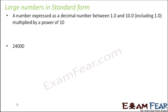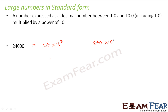Let me give you an example. Let's say you have the number 24,000. What are the different ways you can represent this number in exponential form — that is, as a number multiplied by 10 to the power of something? One way is to write it as 24 into 10 to the power 3. Another way is to write it as 240 into 10 to the power 2.